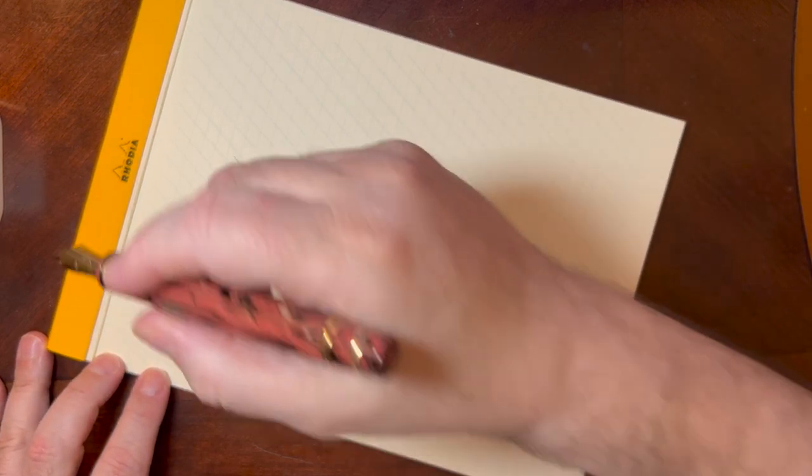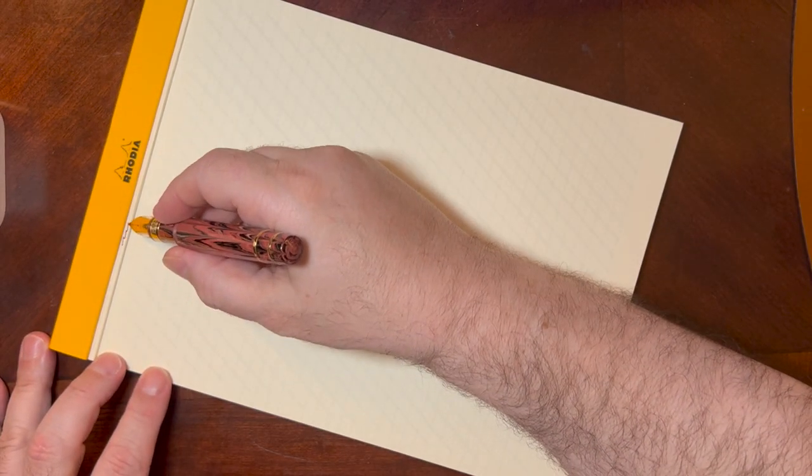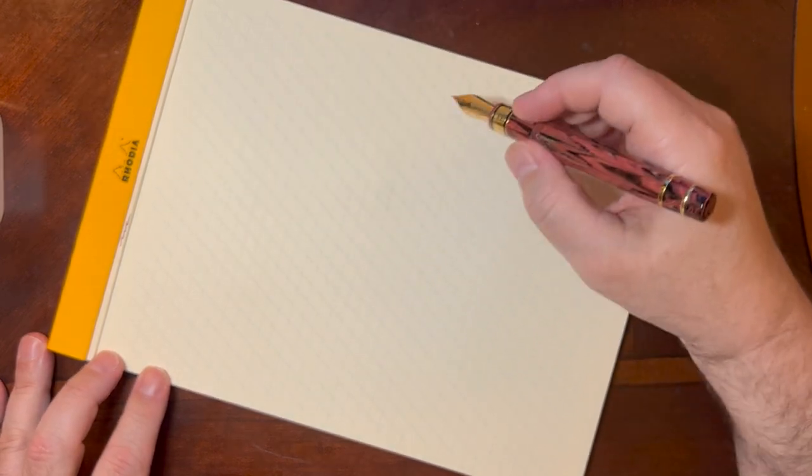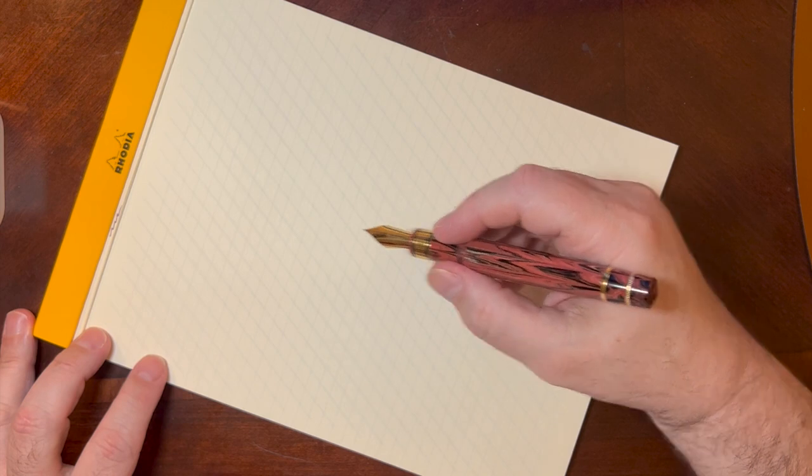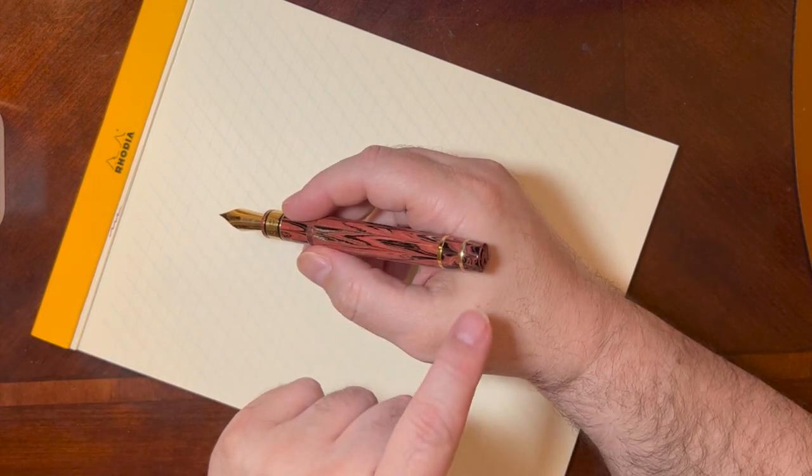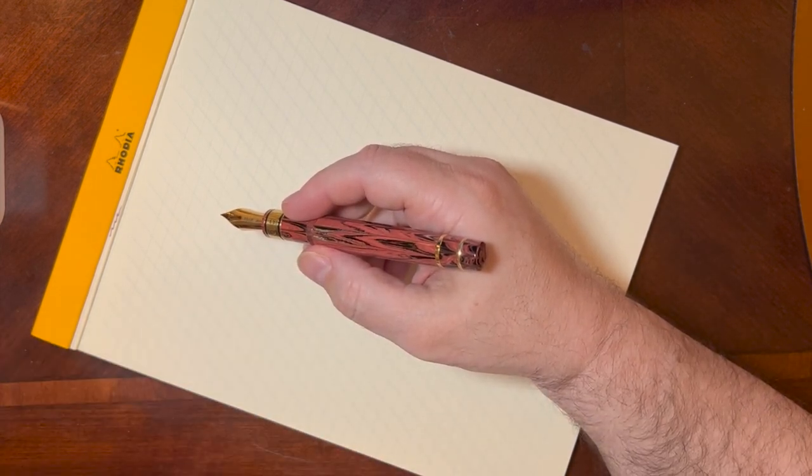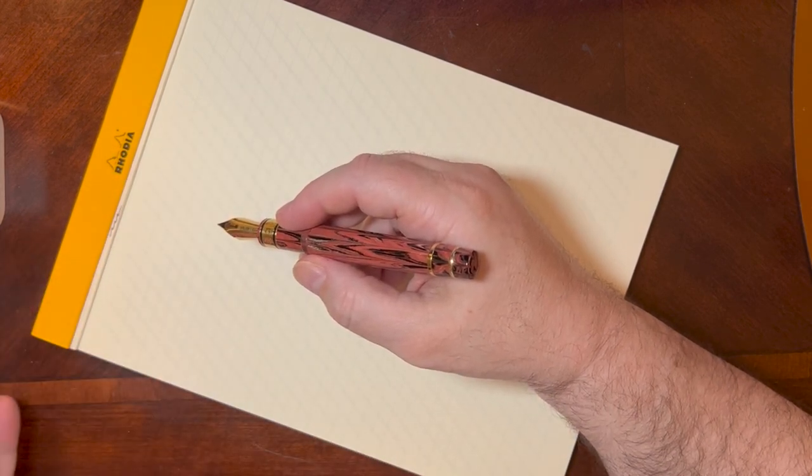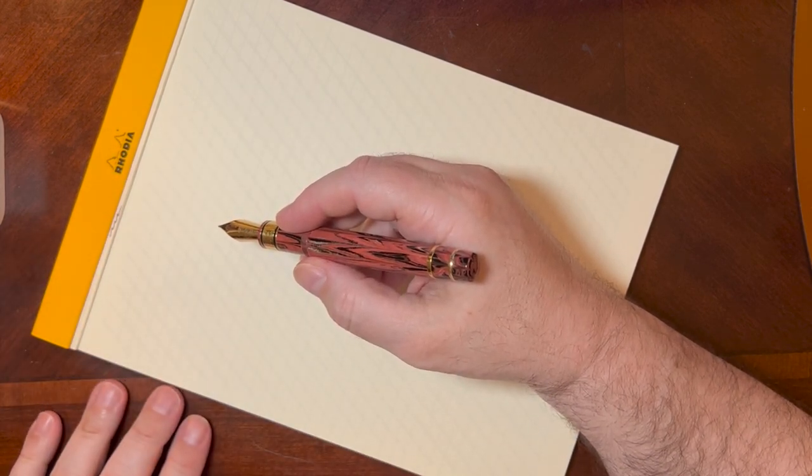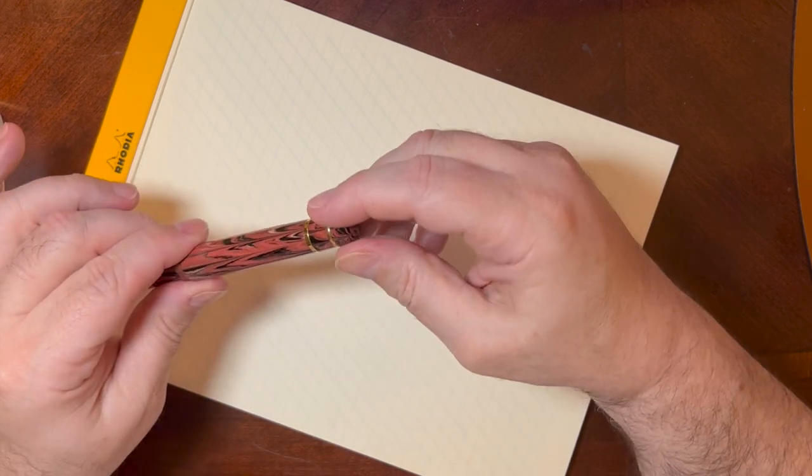And so I've got this of course inked up with my trusty Yama Budo ink, the Iroshizuku Yama Budo. This is actually a piston filler or a plunger, whatever you call it. You twist the back to bring the plunger forward, you twist it back to fill the pen.